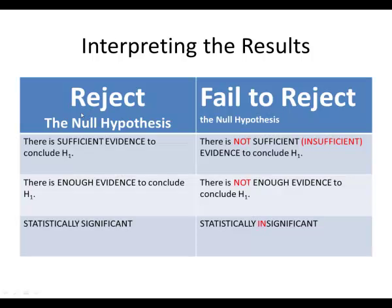Whenever you're interpreting the results, if you reject the null hypothesis — you reject the null that the person is innocent — that means there is sufficient evidence to conclude that the person is guilty, or there is enough evidence, or it can be stated as statistically significant. If it is not, then we fail to reject, which means there is not sufficient evidence. The prosecution did not give enough evidence to say that the person is guilty, or it is statistically insignificant, meaning not significant.